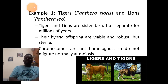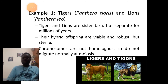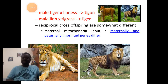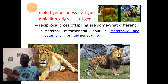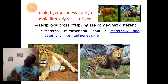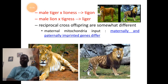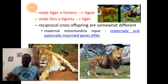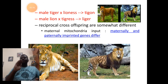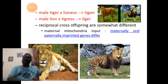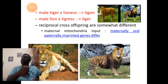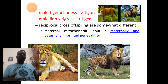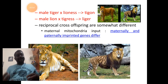Tiger plus lion combined gives ligers and tigons. A male tiger mating with a lioness forms a tigon. If a male lion mates with a tigress then it forms a liger. Generally, maternal effect genes are controlling genes here in the organisms to exhibit those characters. Both the tigon and liger are examples of sterile hybrids.